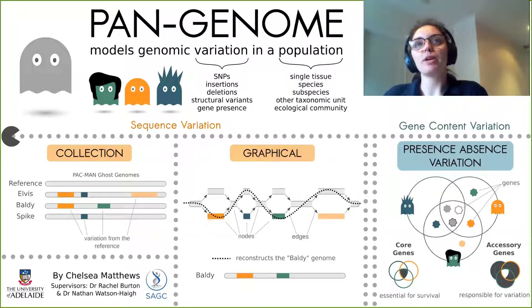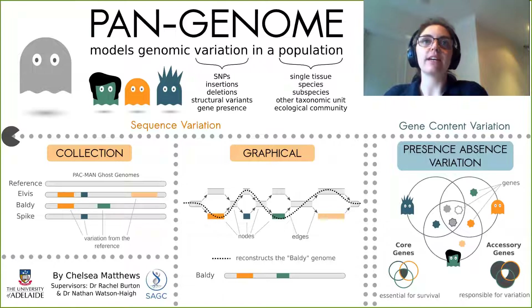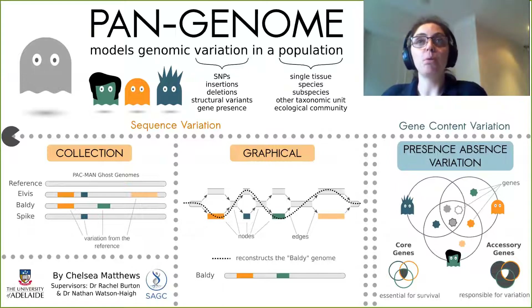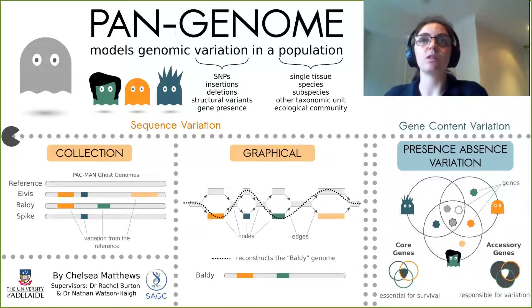A pangenome models genomic variation within a population, and that population could be as specific as a single tissue or as broad as a high-level taxonomic unit. Likewise, the variation modelled by a pangenome ranges from the very small, like SNPs and indels, to very large structural variants, and also extends to gene presence and absence within the chosen population.